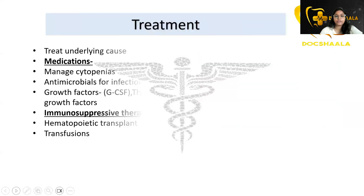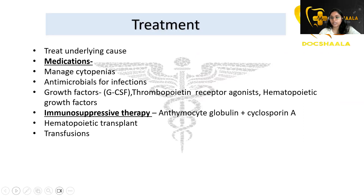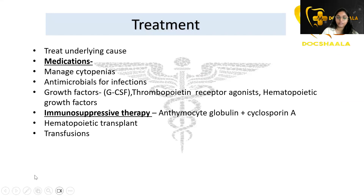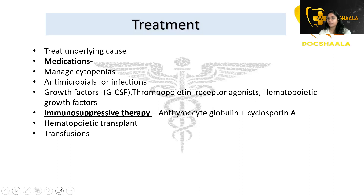Treatment involves treating the underlying cause that led to aplasia. We must manage cytopenias, and if the patient is exposed to infections, antimicrobials are given. Growth factors such as G-CSF and thrombopoietin receptor agonists and hematopoietic growth factors can be given. Immunosuppressive therapy involving antithymocyte globulin and cyclosporine A can be given, and hematopoietic stem cell transplant and transfusions can be performed depending on the cause and prognosis.